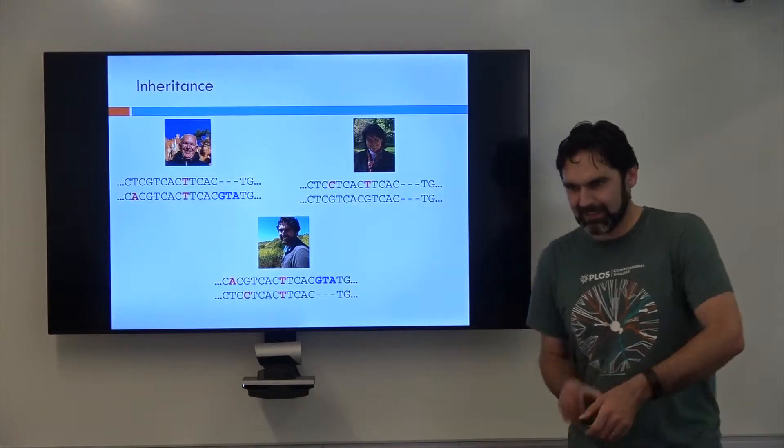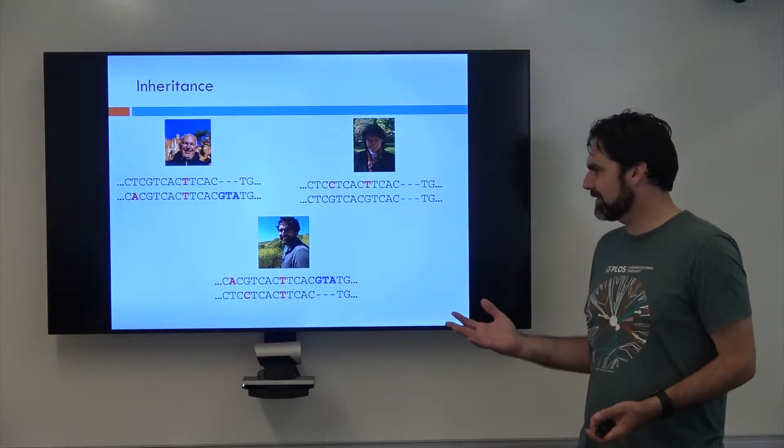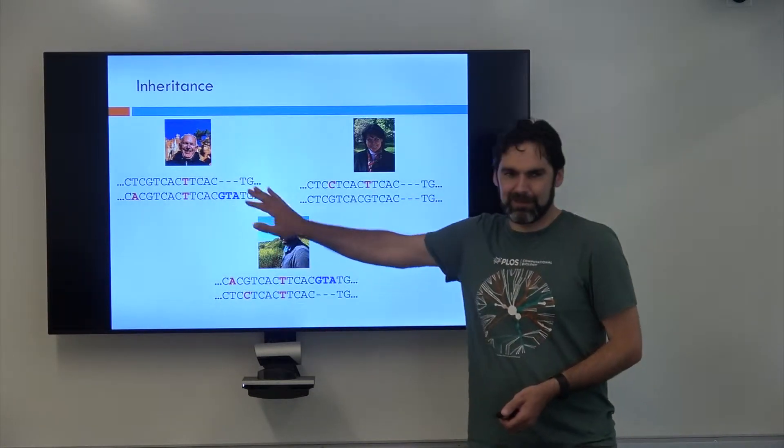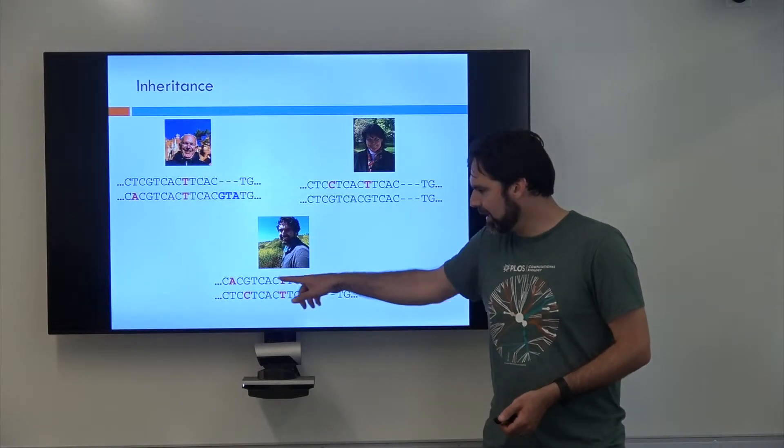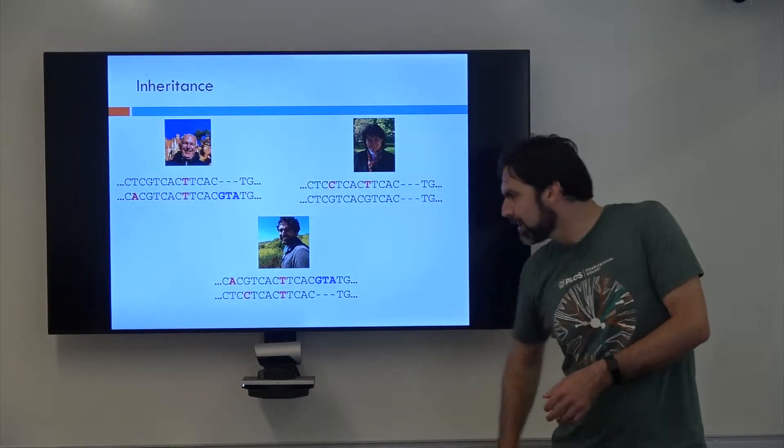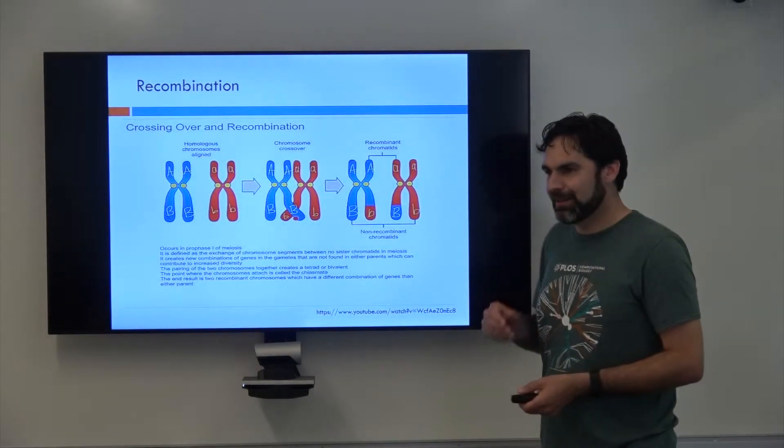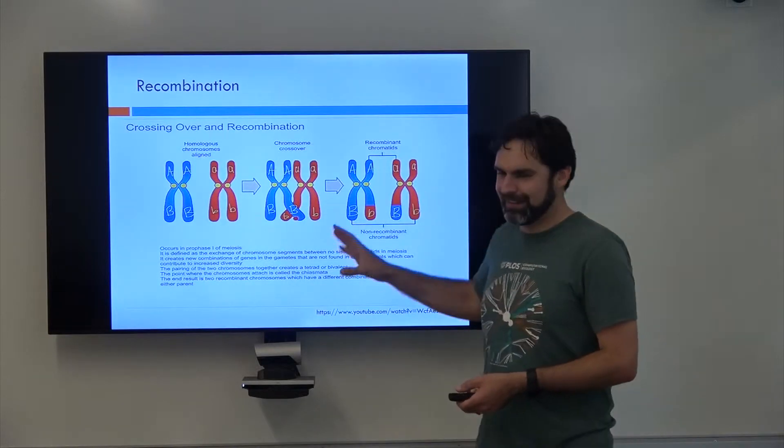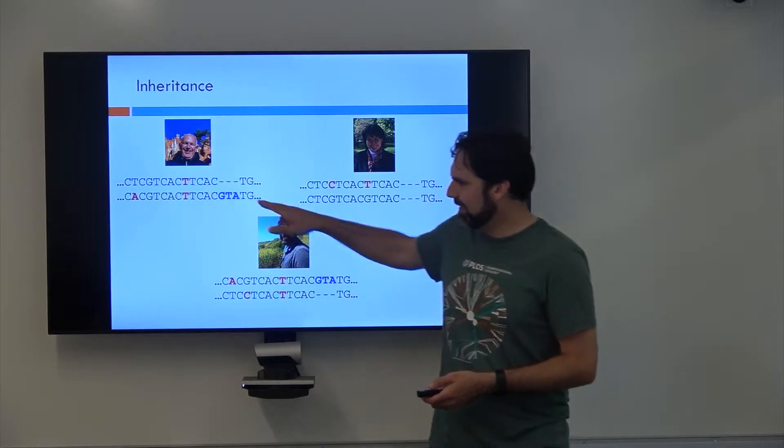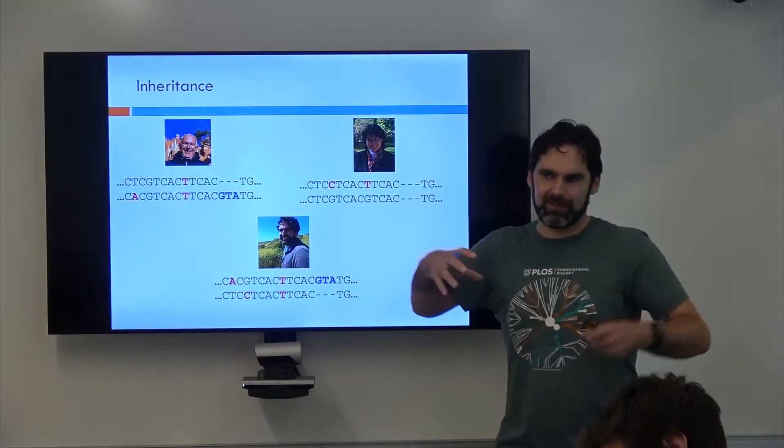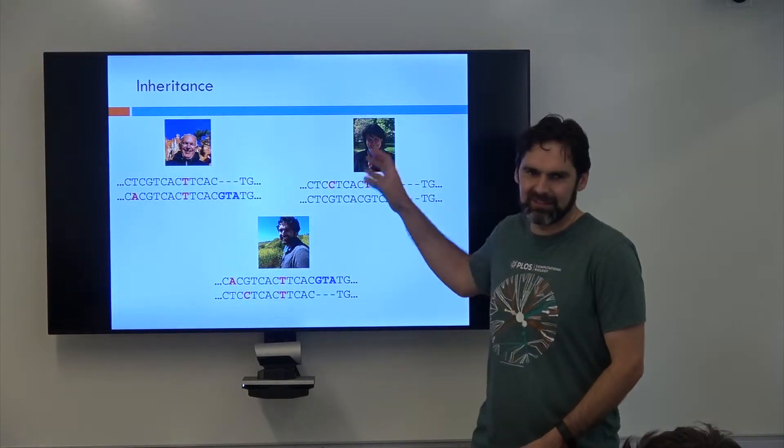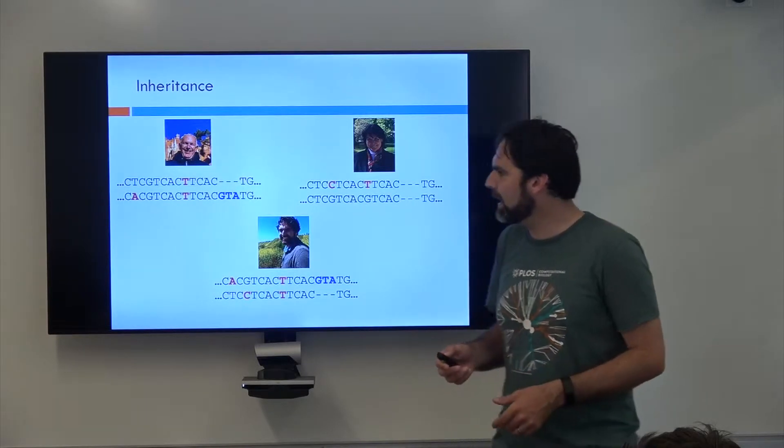So the first thing we're going to learn about is inheritance. This is a very complex topic which I will discuss in one slide and that is that we inherit our genomes from our parents. So I got this copy of my DNA from my dad and this copy of DNA from my mom and that's a total lie. It is a total lie because of this fun thing called recombination.